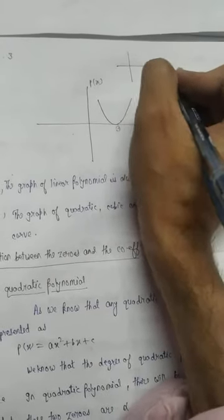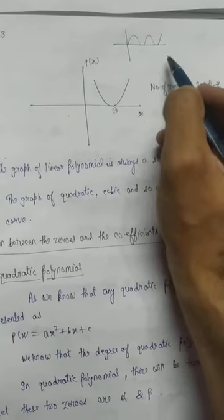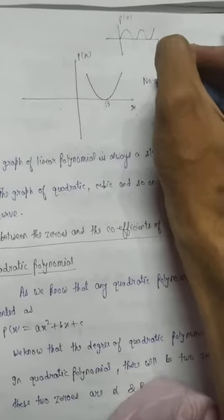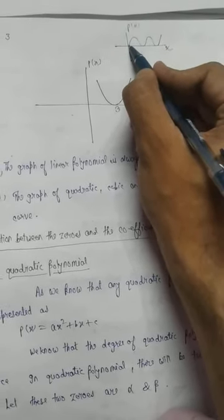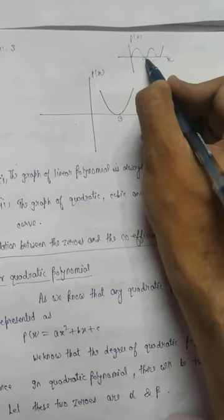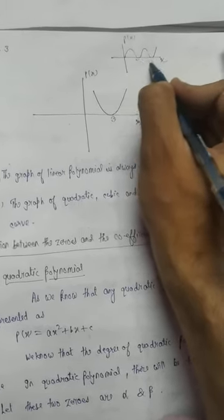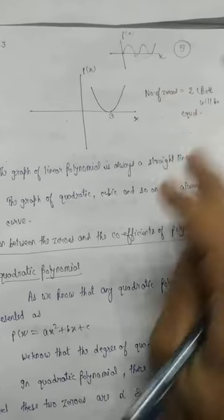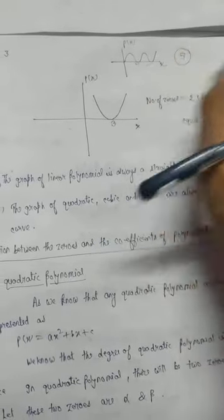Now one more example. In this graph suppose it is p(x) and we need to find the number of zeros. There is one intersection point and two touching points. So one plus two plus two — one plus two is three, three plus two is five. The answer will be five. Out of five zeros, two pairs will be equal and one is distinct.